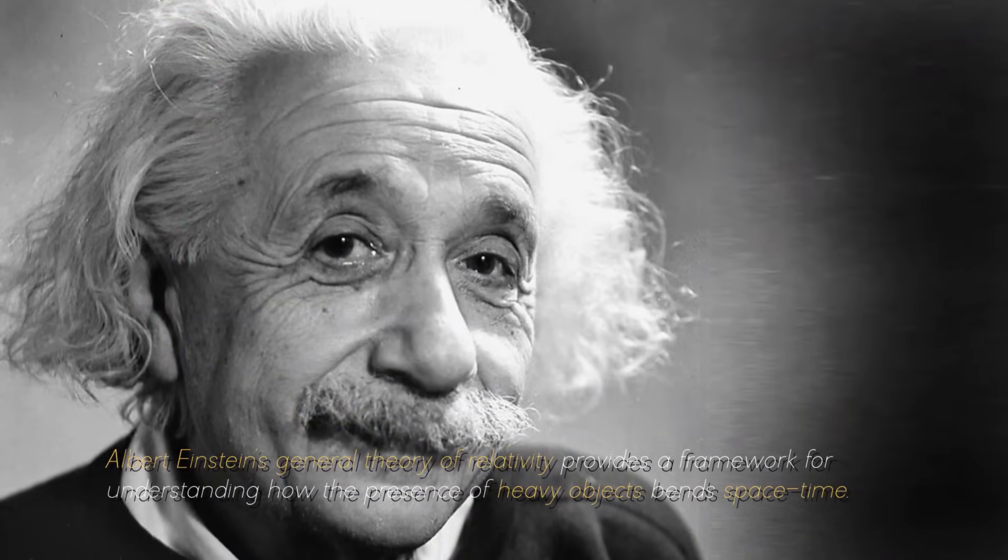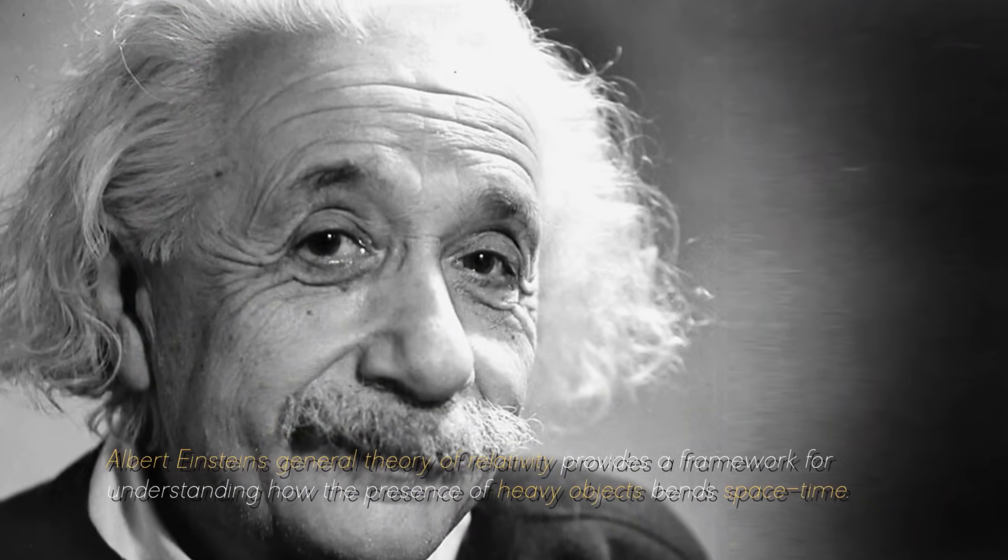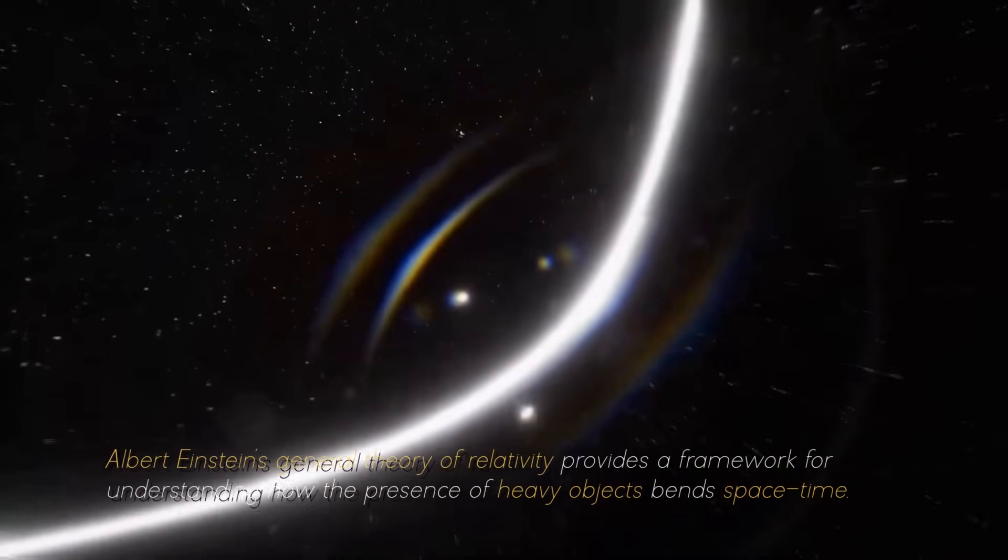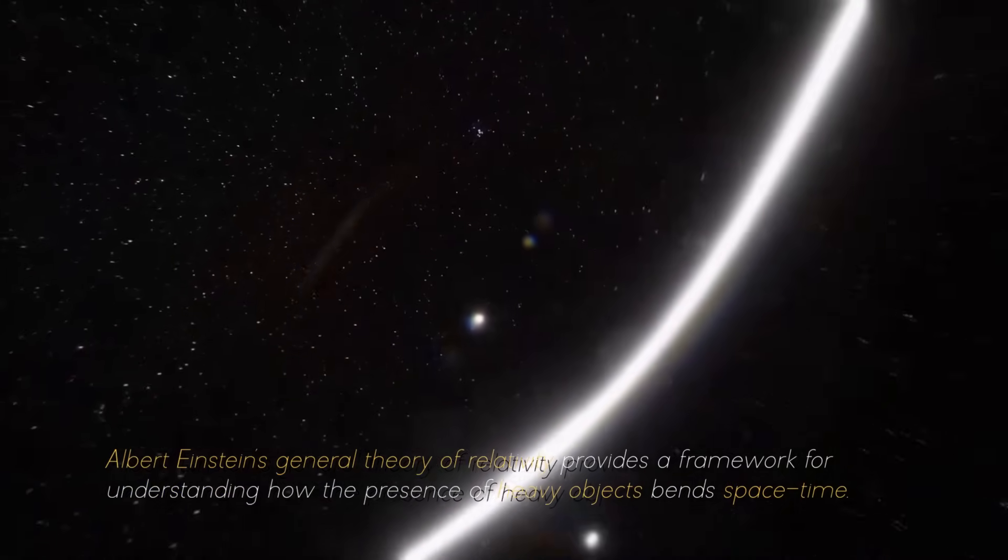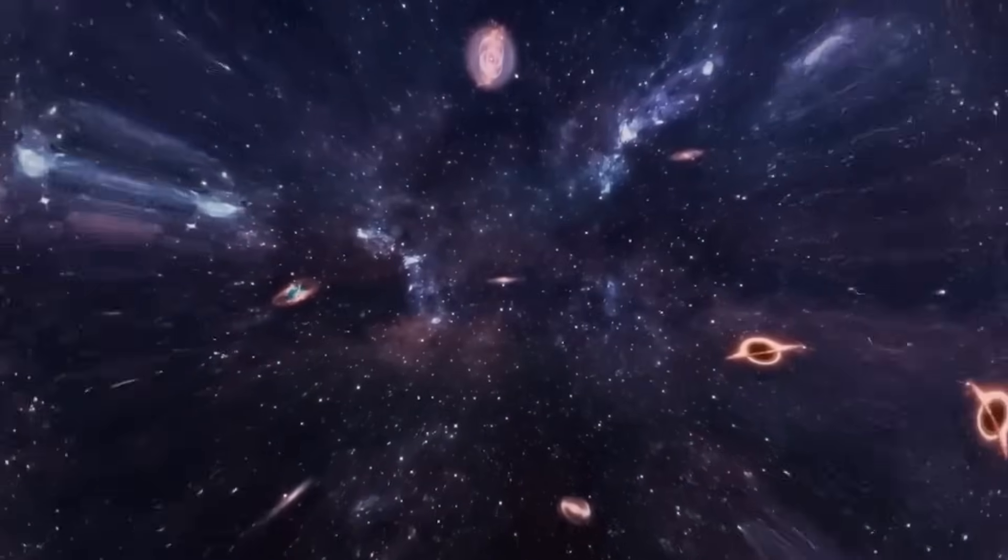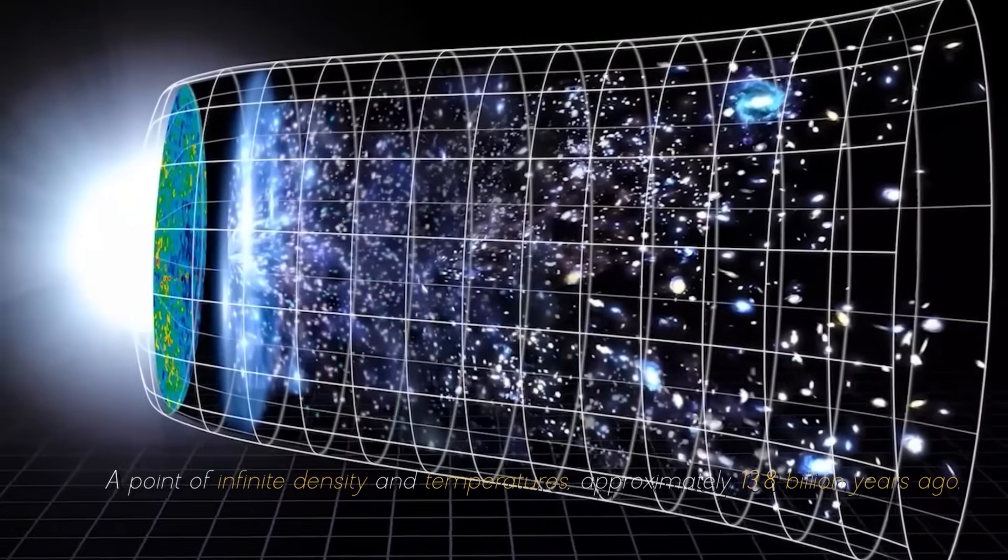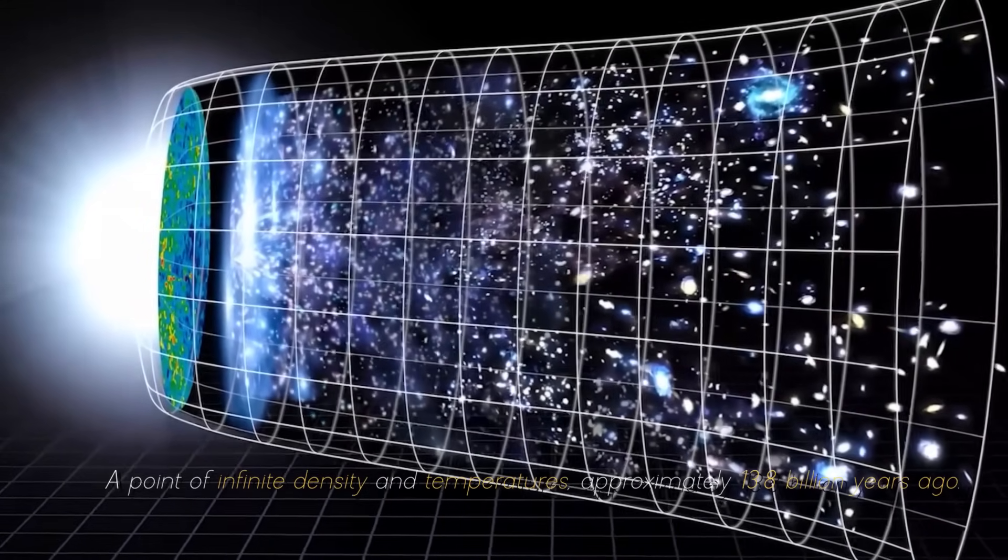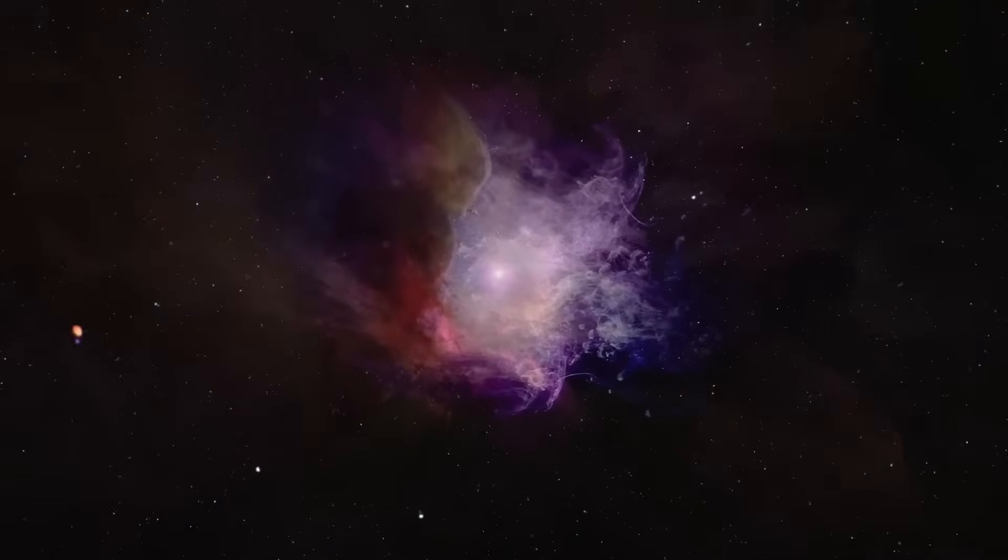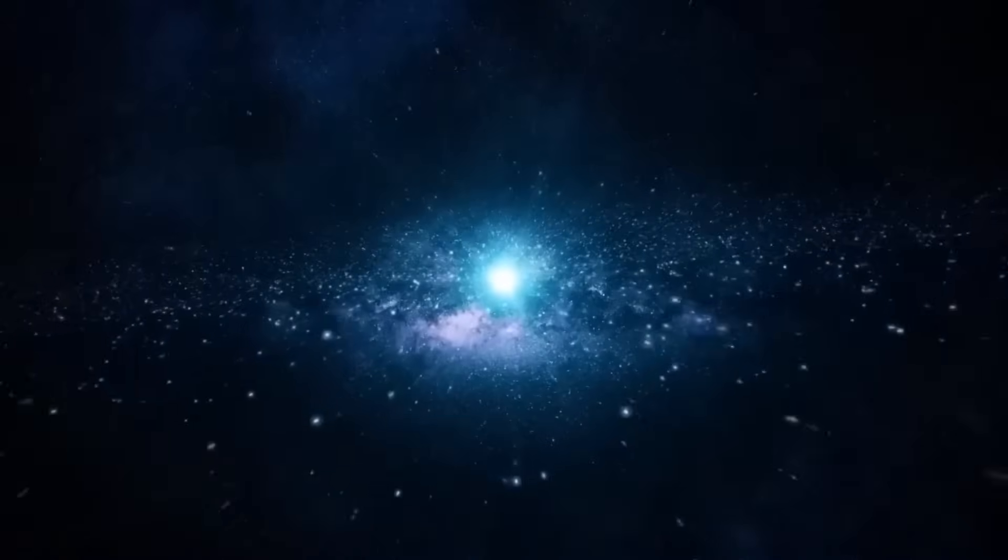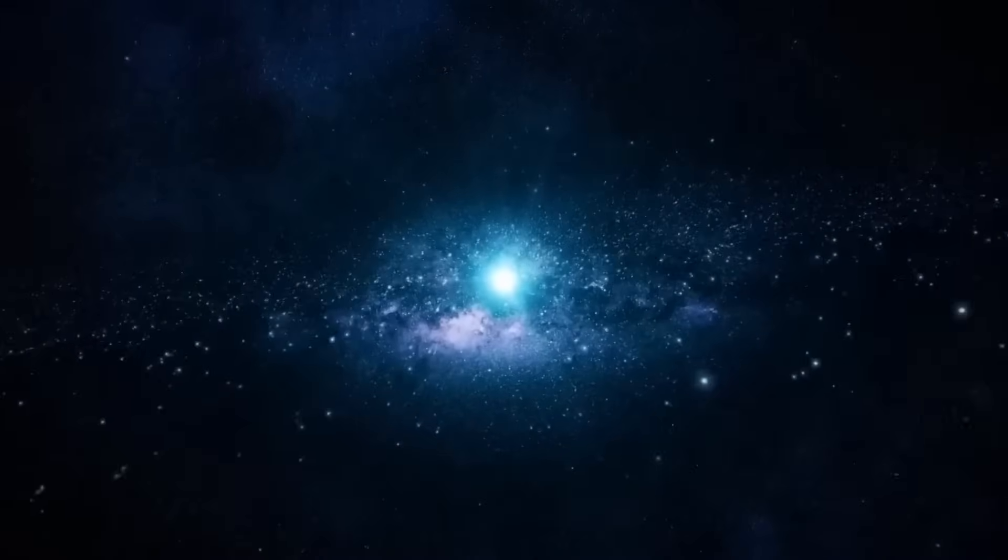Albert Einstein's general theory of relativity provides a framework for understanding how the presence of heavy objects bends space-time. According to this theory, the cosmos originated as a singularity, a point of infinite density and temperature approximately 13.8 billion years ago. All matter and energy were compressed into an extremely small, hot region. At this point, the cosmos began to expand with a rapid and violent event known as the Big Bang.